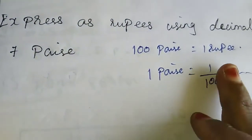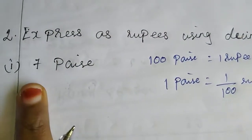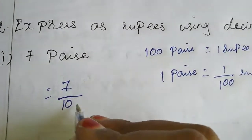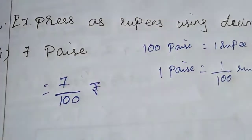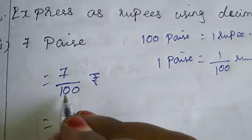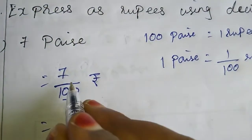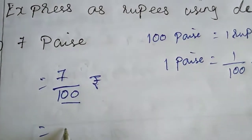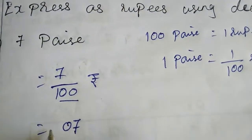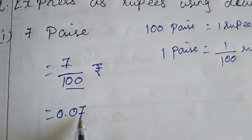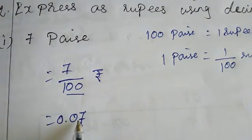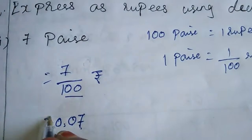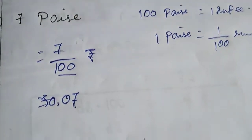So 1 paise equals 1/100 rupees means 7 paise equals 7/100 rupees. 7 divided by 100 — the denominator has two zeros, so the decimal point moves two digits. Here we have only one digit, so we add a zero: 0.07. So this one we write as rupees 0.07.